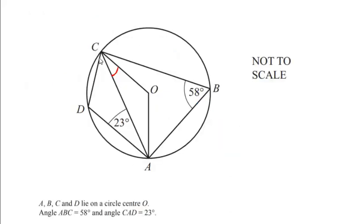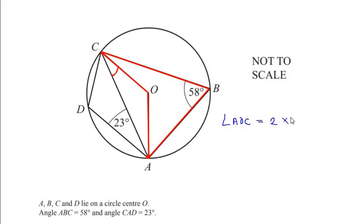Looking back at the diagram, we can see the two points A and C make an angle at the center at point O, and the same two points make an angle at the circumference at point B. Using the theorem, angle AOC at the center is two times angle ABC at the circumference. We know angle ABC is 58 degrees, so angle AOC equals two times 58, which gives us 116 degrees.